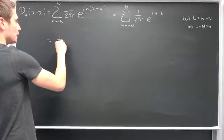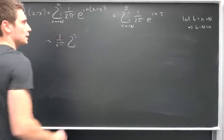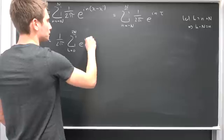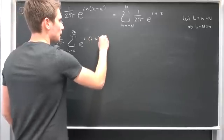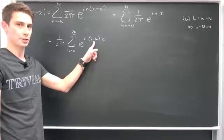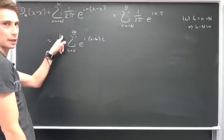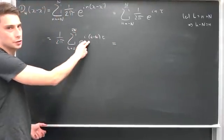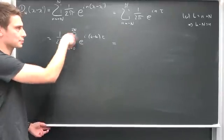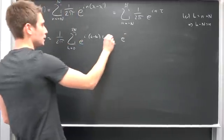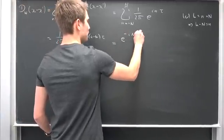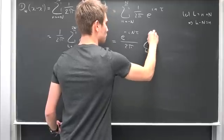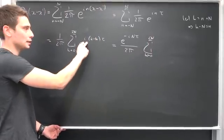We can now plug all of this in to get 1 over 2π — bringing the constant outside — a sum running from k equals 0 to 2N, of e to the i times (k minus N) times tau. We can split this up using exponential rules: break it into two exponential functions and bring the one not dependent on k to the outside. So we have e to the negative i times N times tau, over 2π, times the sum from k equals 0 to 2N of e to the i times k times tau.